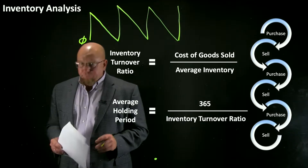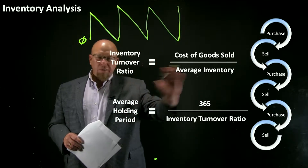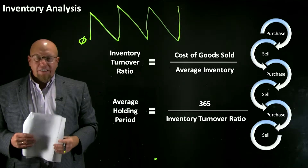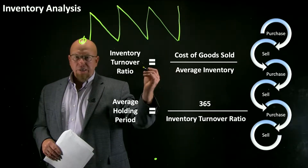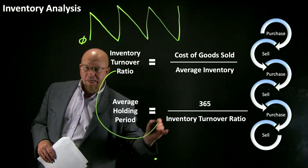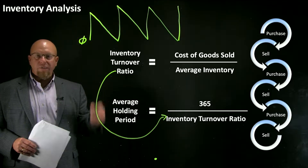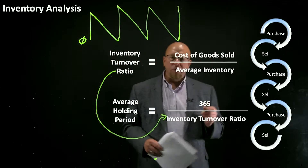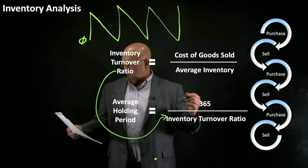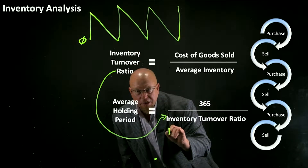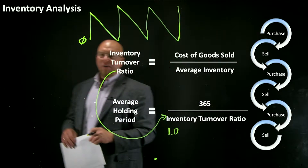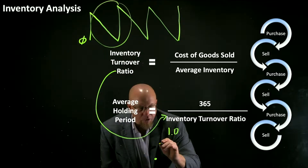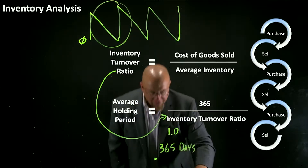The inventory turnover ratio is a metric for how many times per year we do this cycle of buying and selling things. We can take that turnover ratio and divide it into the number of days in a year to get the average holding period — how long did we hold on to our inventory. Let me give you two extreme examples. If your inventory turnover ratio were 1.0, that means you turn your inventory over one time per year, and your average holding period would be 365 days.